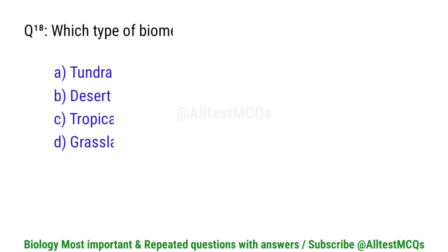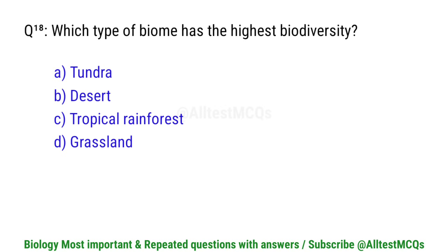Question number 18. Which type of biome has the highest biodiversity? Correct option is C. Tropical rainforest.